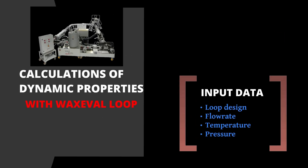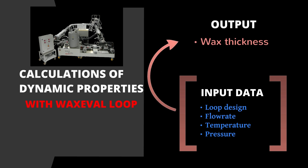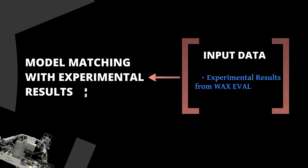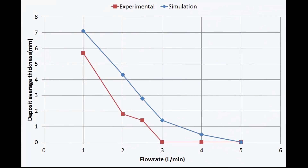Once the model is properly adjusted to predict the basic properties, the wax eval loop design is entered, and several wax thickness predictions are done according to a constant flow rate. As for the basic properties, the theoretical results are compared to the experimental measurements from the wax eval loop. This chart presents the wax deposition thickness versus the flow rate. The blue curve is the simulation and the red one the experimental measurement. The trends and the values are very similar.